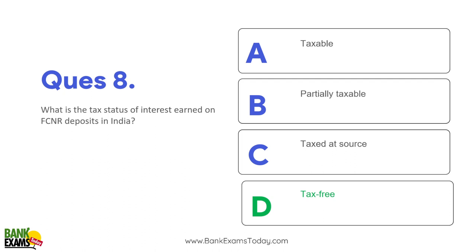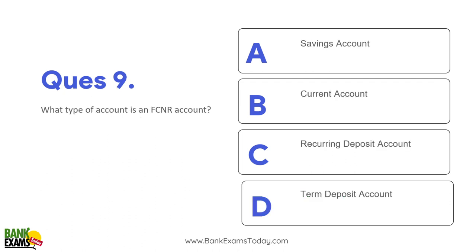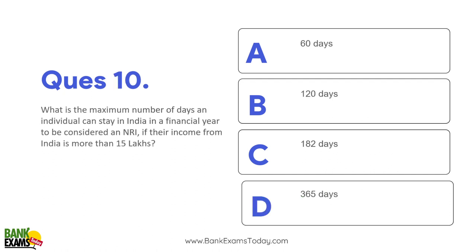Question 7: What is the tax status of FCNR deposits? They are totally tax free. Question 8: What types of accounts are available under FCNR? Only fixed deposits, also called term deposits. Question 9: What is the maximum number of days an individual can stay in India in a financial year to be considered an NRI if their income is more than 15 lakhs? Answer: 120 days maximum. Staying more than 120 days would mean they are not considered an NRI.